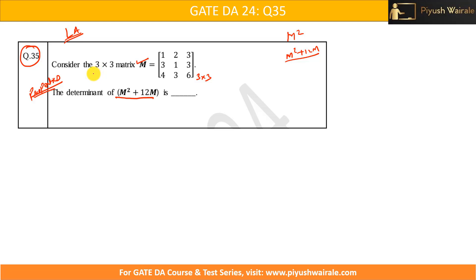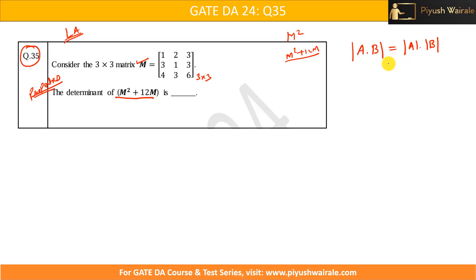We have one important property of determinants: for two matrices A and B, the determinant of AB equals the determinant of A multiplied by the determinant of B, provided that both A and B are of the same dimension.